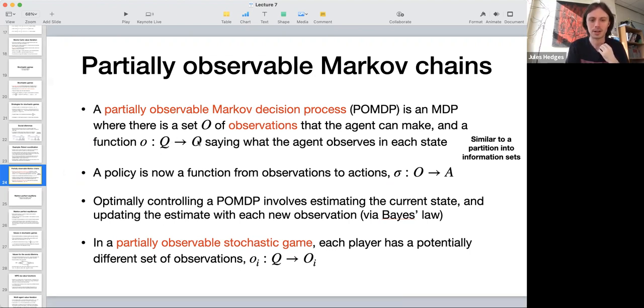There's a function that says, given the current state, what observations could they make. This could also be a stochastic function because the agent could have, say, faulty sensors or imperfect sensors.